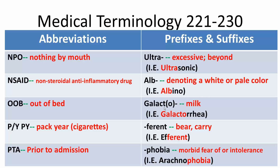Then we have GALACT, or GALACTO, which means milk. Galactorrhea is an abundant flow of milk in a lactating woman. Then we have FERR/FERRENT, meaning bear or carry. For example, efferent means carrying away from a source, like a vessel draining fluid from an organ.